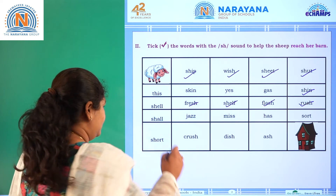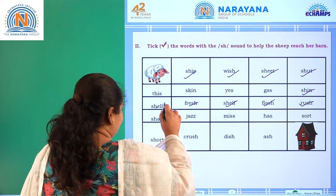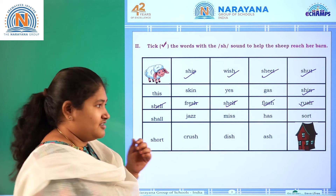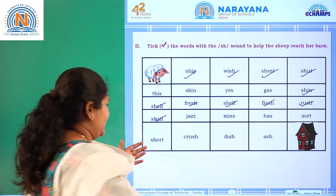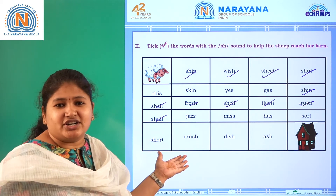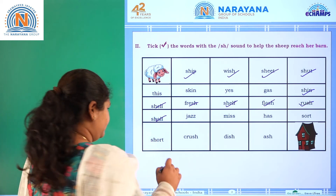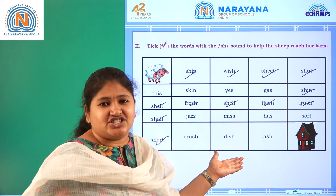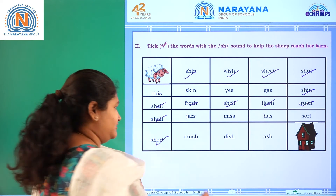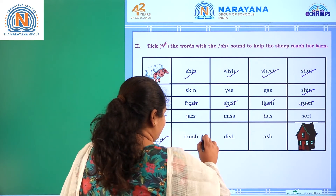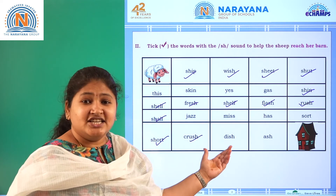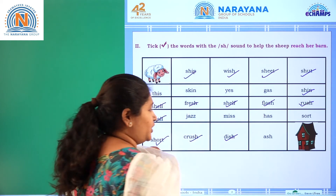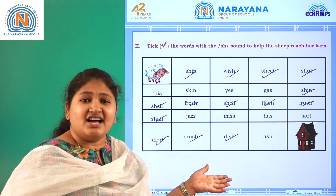And it's shell. Next is also shell. And next is shot. Next is crush. And next is dish. And the last one near to the barn is ash.